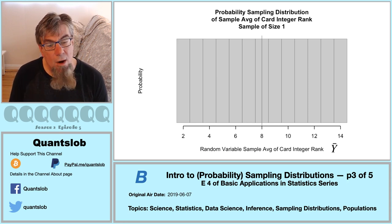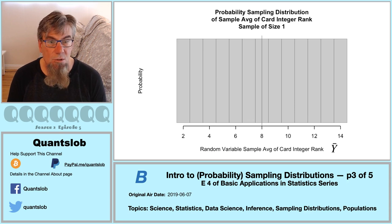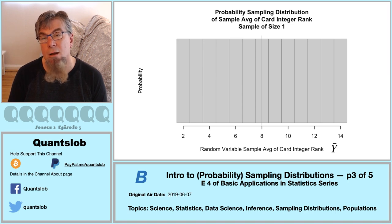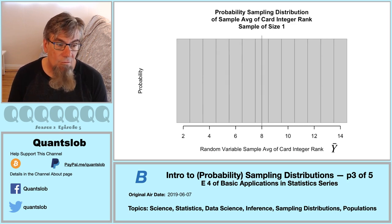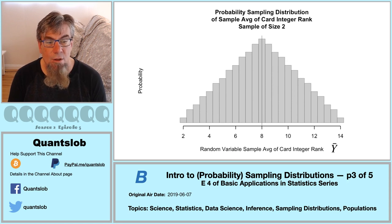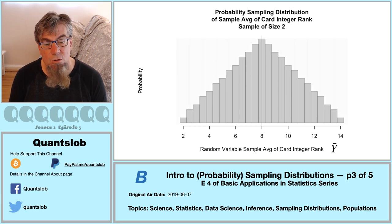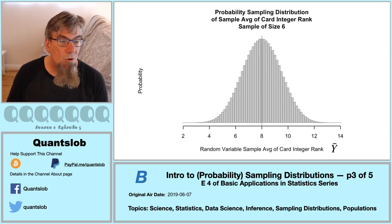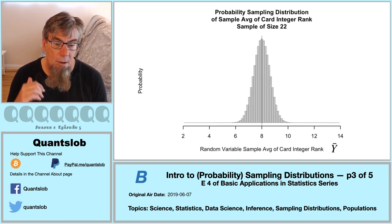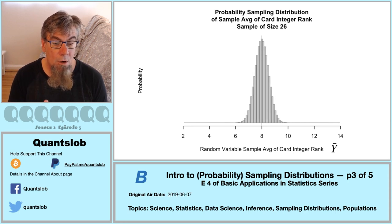Histograms are used to show the distributions of quantities — especially useful when the domain of quantities is large. With a sample size of one, the domain is simply the integers 2 through 14. But as the sample size increases, the domain of possible averages will increase dramatically. Notice in the graph there's a thin vertical line marking the population average of the attribute — 8. Here is the sampling distribution for a theoretical sample of size 2, and we animate this graph for sample sizes up to 26. The distribution is centered at 8, has a bell shape, and gets narrower and narrower as the sample increases.